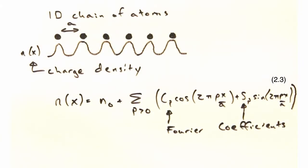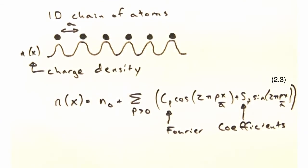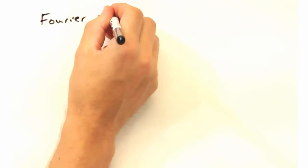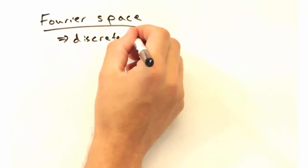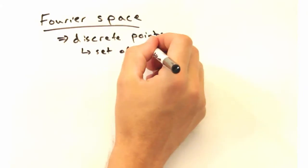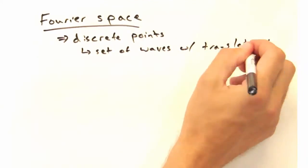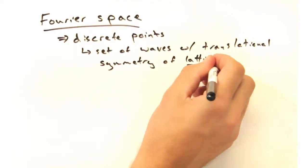Where we're summing over only positive values of the integer P. This makes our Fourier space a set of discrete points where the allowed points are associated with waves that are consistent with the translational symmetry of the lattice.